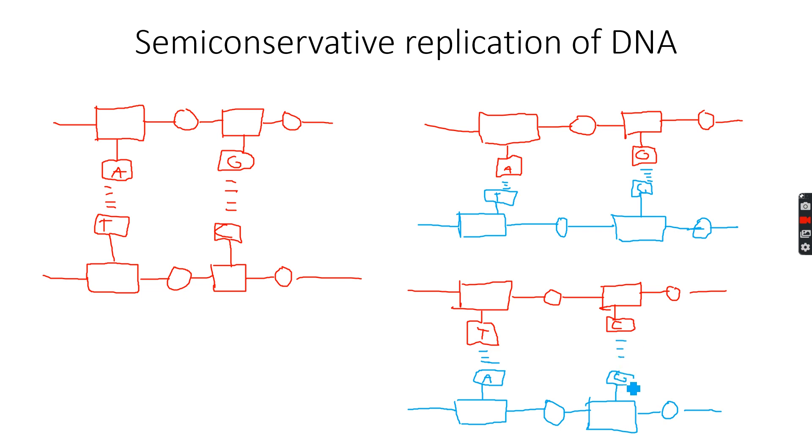These two will pair up. Now you can see that from the initial one DNA molecule—this was our one DNA molecule—now we have two new DNA molecules. So the DNA has been replicated. This process is known as semiconservative replication of DNA because now we have two copies of the original DNA molecule.